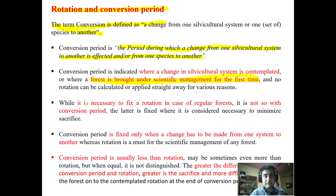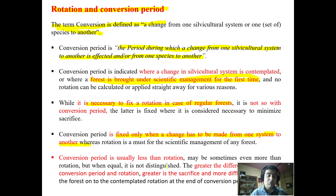Just like rotation, we have a fixed rotation period — say 10 years or 20 years. It is not necessary that we fix the conversion period, but in certain cases a conversion period may be fixed only when we want to change from one system to another. Conversion period is usually less than rotation, or sometimes it may be more than rotation. In any case, the greater the difference between the conversion period and the rotation, the greater is the sacrifice of the crop.